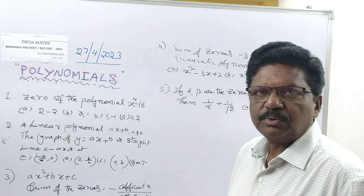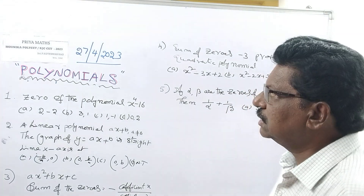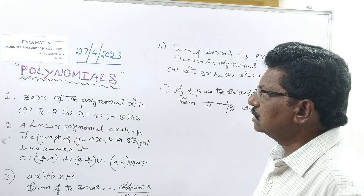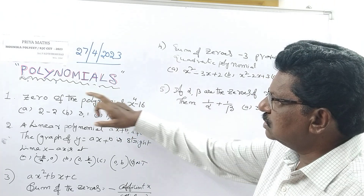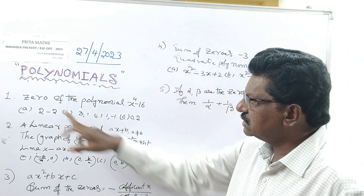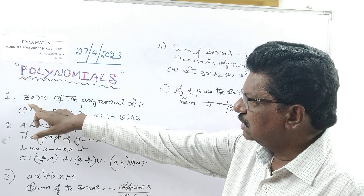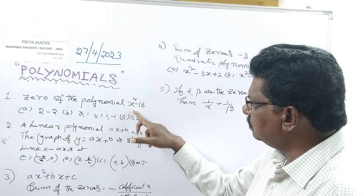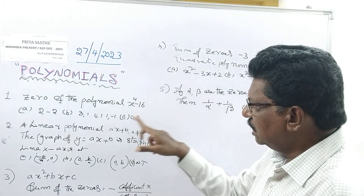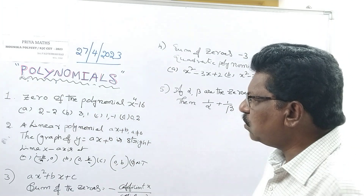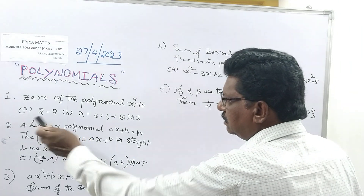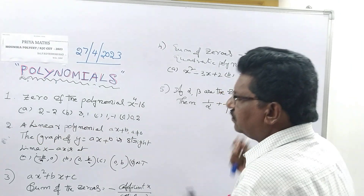Hi everyone, welcome to Priya Math channel. Some more MCQ questions from polynomials. The first option is the zeros of the polynomial X squared to the power 4 minus 16. The zeros of the polynomial — we have to observe first.